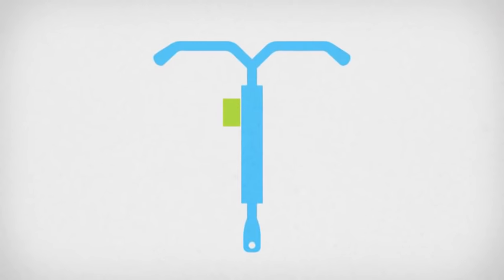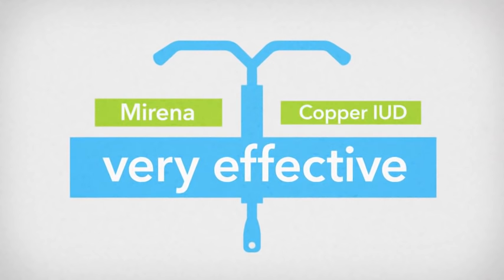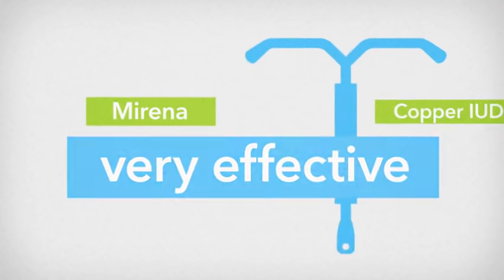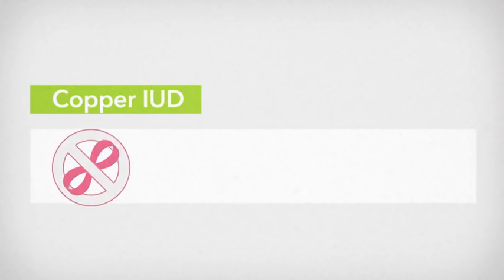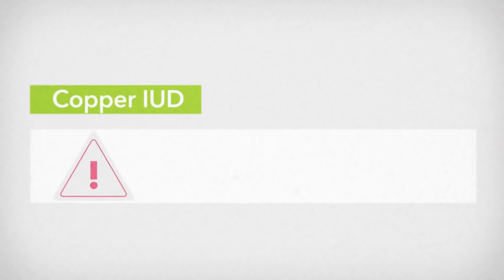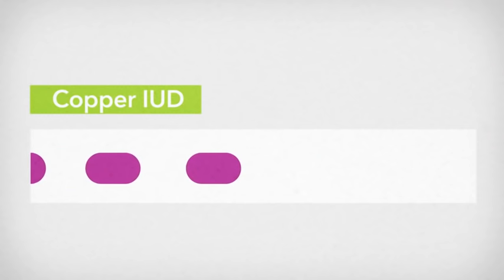In summary, the Mirena and the copper IUD are both very effective methods of contraception. The Mirena will generally make the periods lighter and may stop them altogether. Irregular bleeding in the first three to six months is common. The copper IUD contains no hormones, can be used as emergency contraception and generally doesn't affect the regularity of periods, but they may become heavier, more painful and last a little longer.